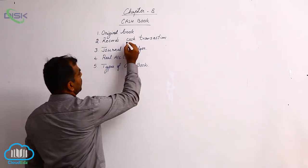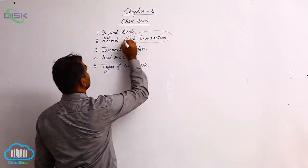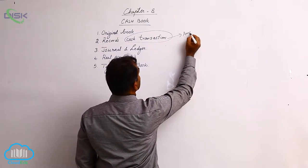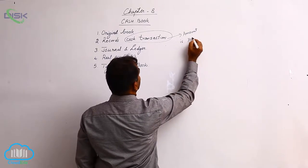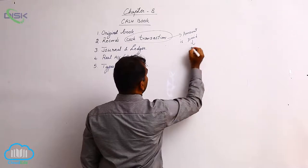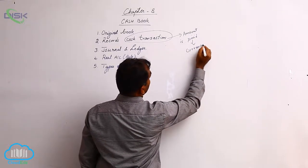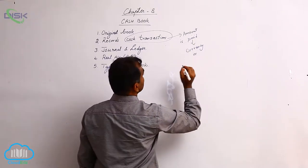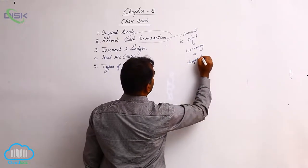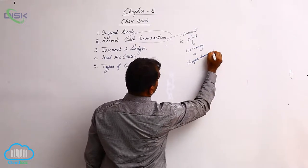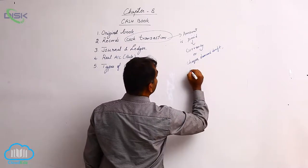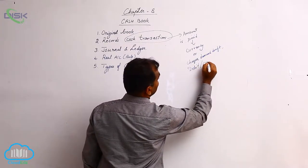We have already discussed what is a cash transaction. A cash transaction is something where an amount is paid. When we say amount is paid, it may be paid in currency — what we generally call cash — or you can use other means like check, demand draft, or debit card.